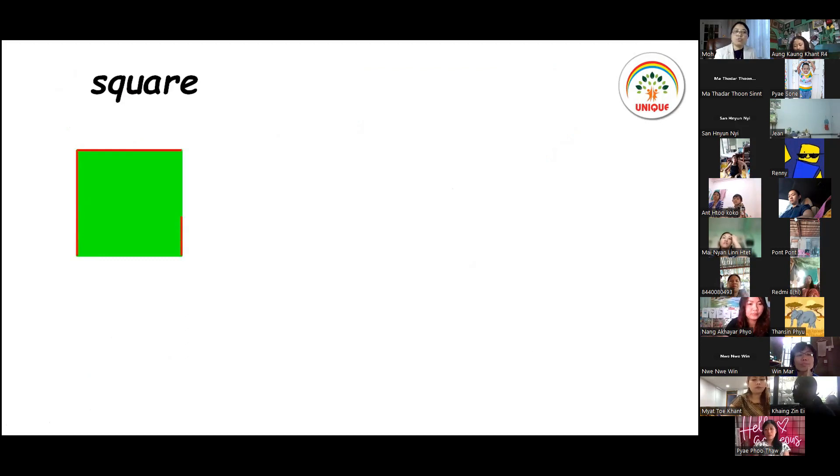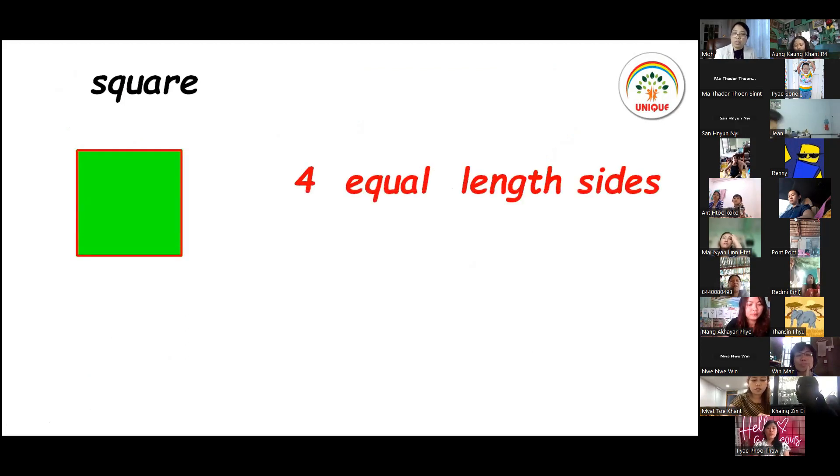Let's look at the square. One, two, three, four. The square has four equal length sides.